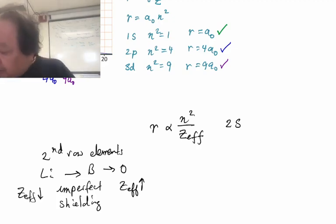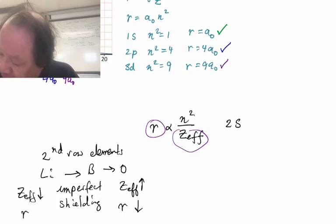And since z effective is in the denominator, the r's will be in the other way. r's will be smallest on this side and r's will be greatest on this side.